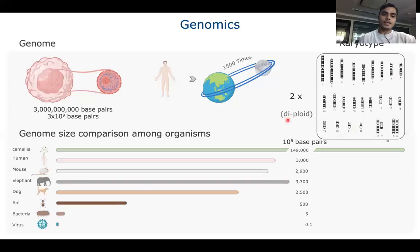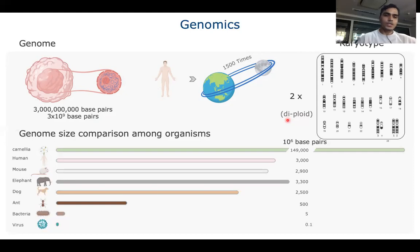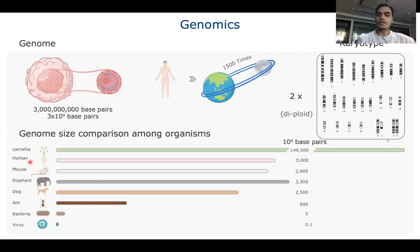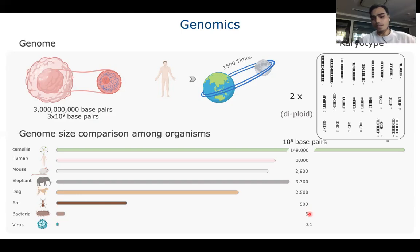To understand genome size across different organisms: the Japanese camellia plant has 149 billion base pairs, while humans have 3 billion, mice have 2.9 billion, elephants have 3.3 billion, and dogs have 2.5 billion base pairs. Ants have 500 million base pairs, bacteria have 5 million, and viruses have 0.1 million base pairs.